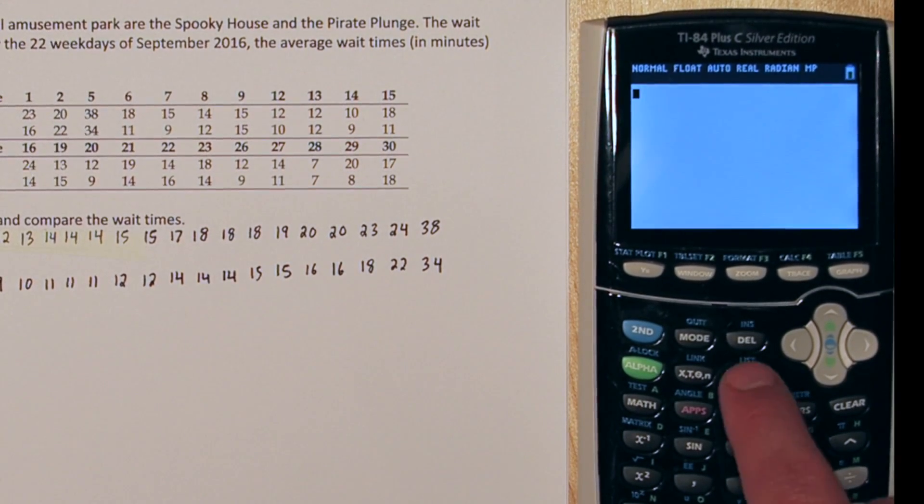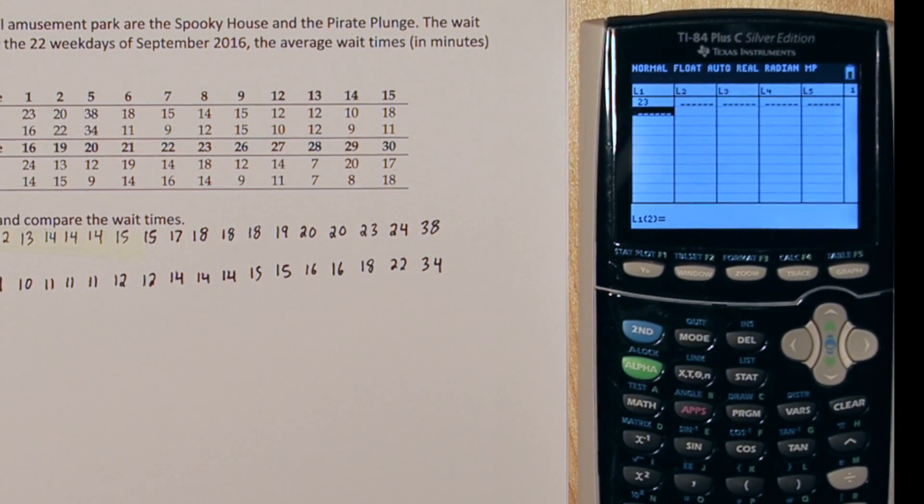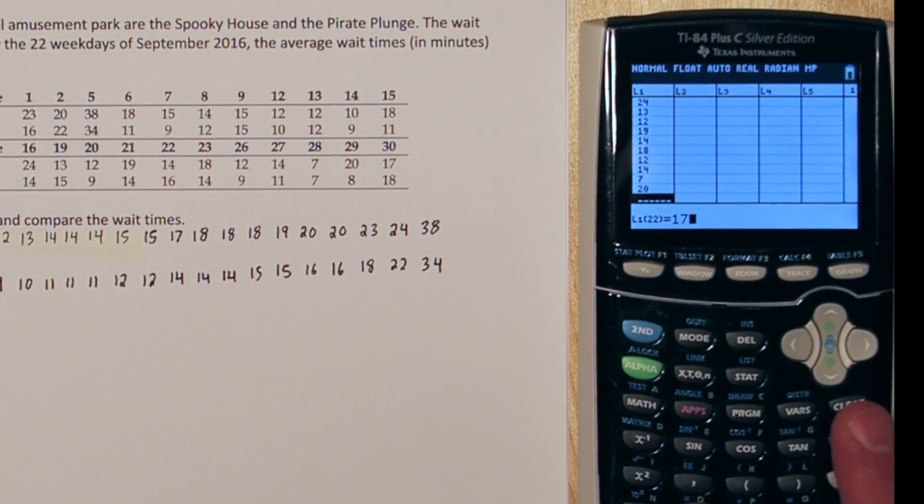If you press STAT on your calculator and then ENTER, these are called lists. Next we're going to type all the spooky house waiting times into list 1. Now push the over button to get to list 2 and type all the Pirate Plunge waiting times.